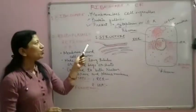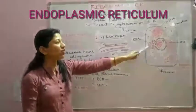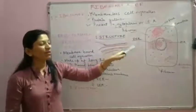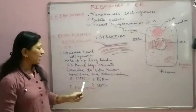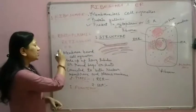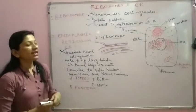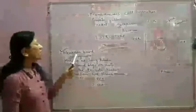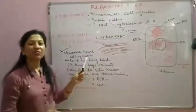Now we will talk about the second most important cell organelle — the endoplasmic reticulum. We will first cover its structure, then its types, and then its functions. First point about the endoplasmic reticulum: these are membrane-bound cell organelles. You can compare here — ribosomes are membrane-less cell organelles, but the endoplasmic reticulum is a membrane-bound cell organelle. It has its own membrane.